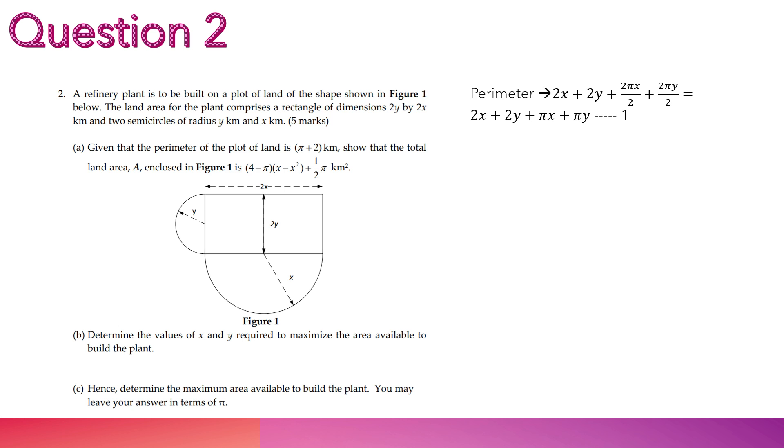I will call this my first equation. And I did the same way for area. And that's my second equation. I take the perimeter equation, equation 1, and equal it to pi plus 2, which is mentioned in the question. The perimeter of the plot of land is pi plus 2 kilometers. Next, I push all the y to the right hand side. And I get this.